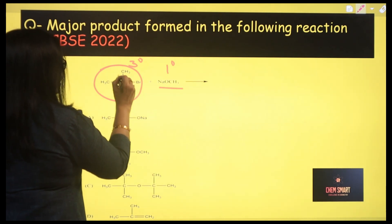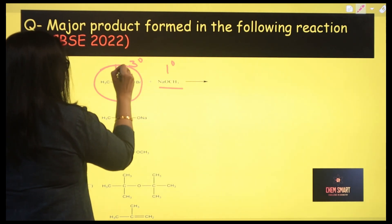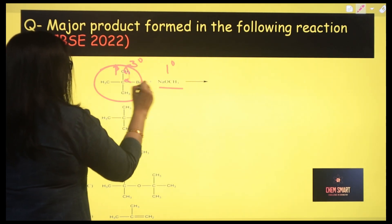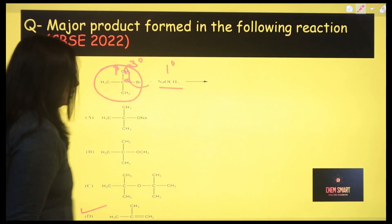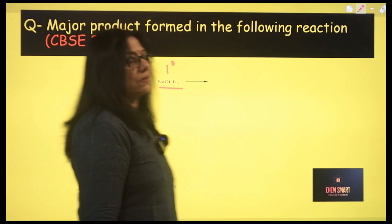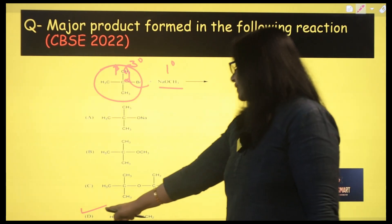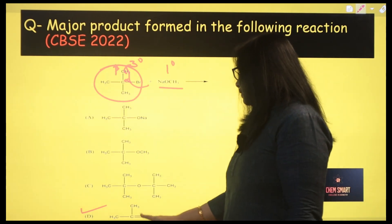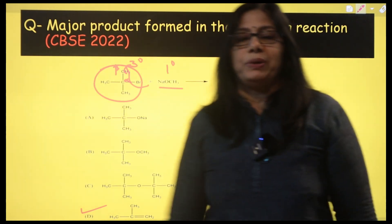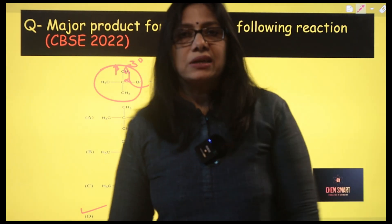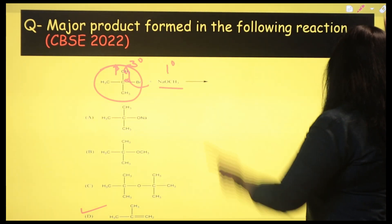Being a tertiary alkyl halide, it will undergo beta elimination, so HBr will be removed and you will get an alkene. The answer will be the last option — that is 2-methylprop-1-ene, or 2-methylpropene. That is the answer. This concept is repeatedly asked.